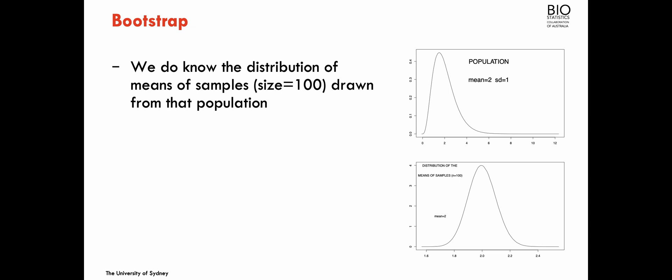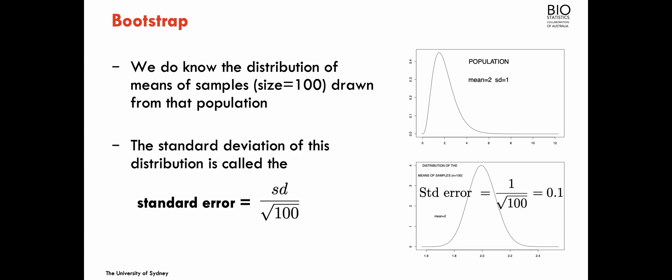What the central limit theorem tells us is how multiple samples from this population would behave in terms of their means. If we draw many samples from this population — which has mean 2 and standard deviation 1 — the distribution of the means of those samples would tend to be a normal distribution, with mean equal to the population mean, because samples sometimes have a mean below and sometimes above, and this behavior is symmetrical. The standard deviation of this distribution is given by the population standard deviation divided by the square root of the sample size.